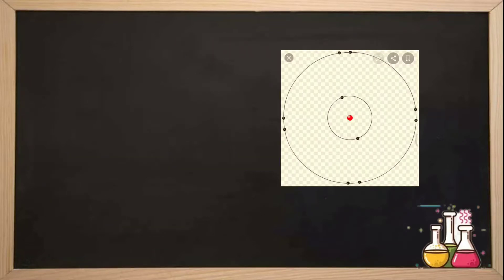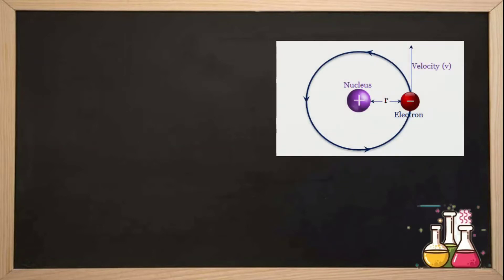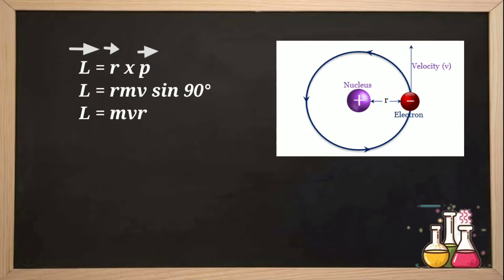Let's say the electron is in circular motion in its orbit. The electron has mass m and is moving with velocity v. The distance from the center — the radius — is r. Angular momentum is what we deal with in circular motion. The linear momentum is m into v. In angular motion, angular momentum L is the cross product of two vectors: the r vector and the p vector. So L equals r cross p, which means angular momentum equals r·m·v·sin θ.